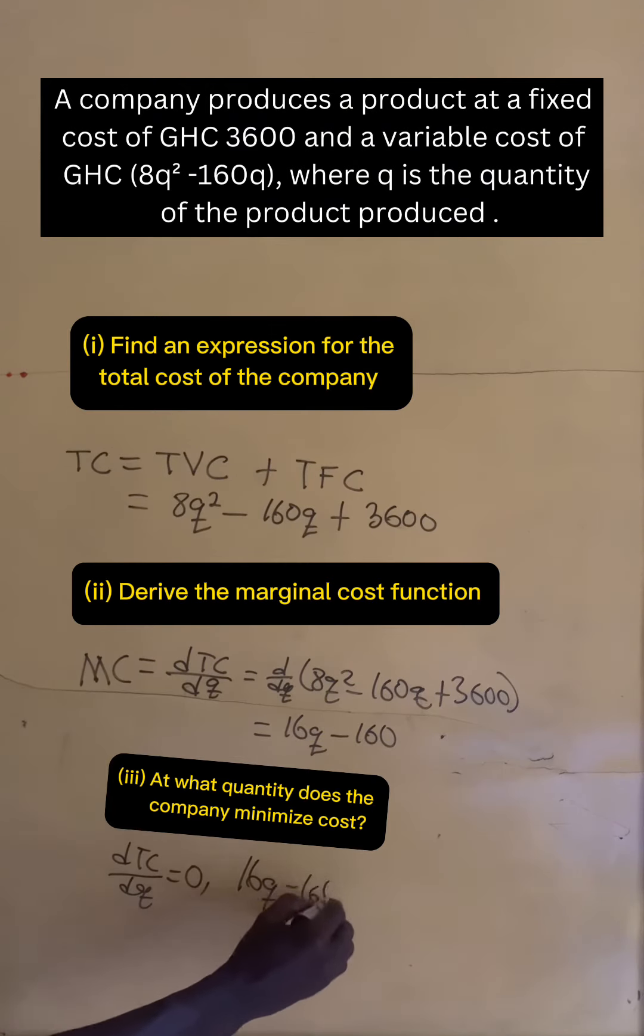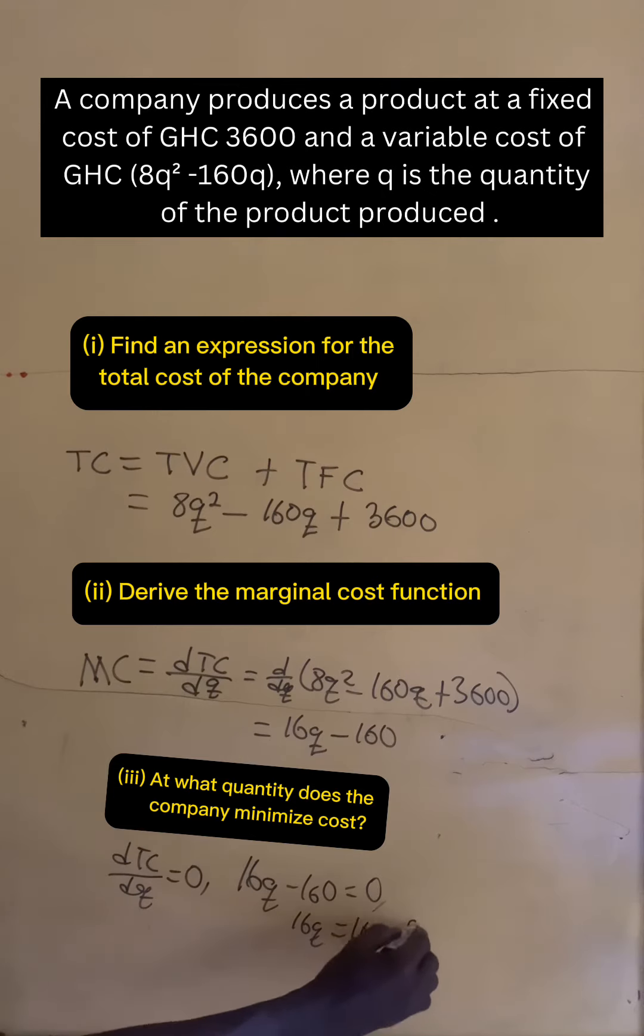So we have 16q - 160 = 0. Simple rearrangement gives 16q = 160, which gives q = 10. So the cost of production is minimized at 10 units.